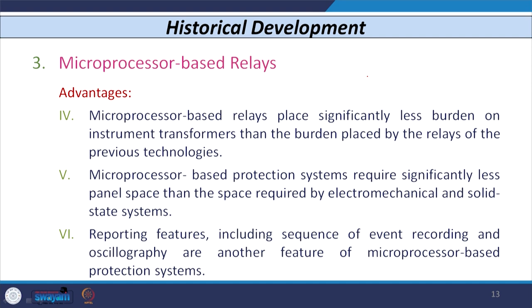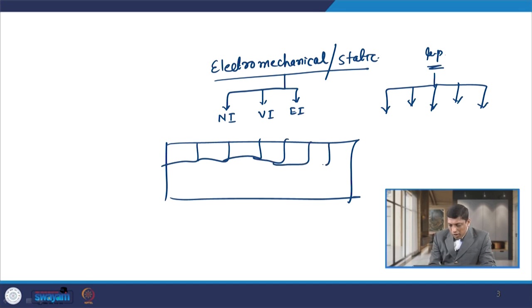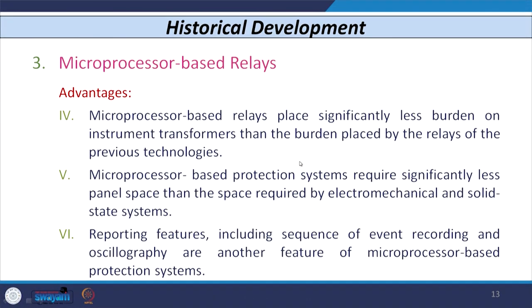Microprocessor-based relays also place less burden — maybe 5 VA or 1 VA — compared to electromechanical or static relays which may have 20 to 30 VA. They also require less panel space, so in a substation with limited space you can accommodate more microprocessor-based relays than electromechanical or static ones. Additionally, they have reporting features: if any event or abnormal condition occurs, it is captured by the relay and you can play back, visualize, or access the data in graphical or text form.